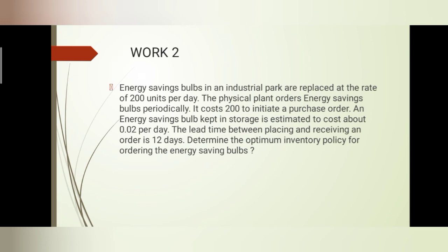Another example: Energy saving bulbs in an industrial park are replaced at a rate of 200 units per day. The physical plant orders bulbs periodically. It costs Rs. 200 to initiate a purchase order. An energy saving bulb kept in storage costs about Rs. 0.02 per day. The lead time between placing and receiving an order is 12 days. Determine the optimal inventory policy for ordering the energy saving bulbs.